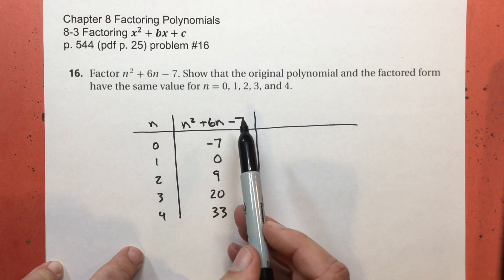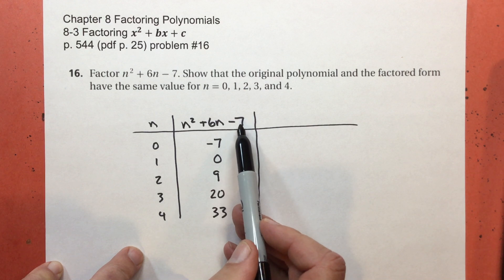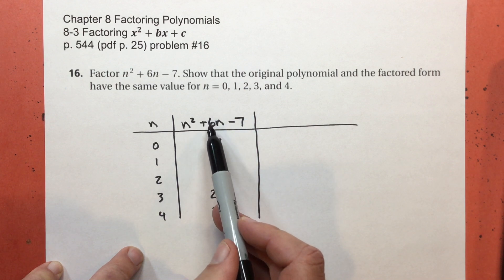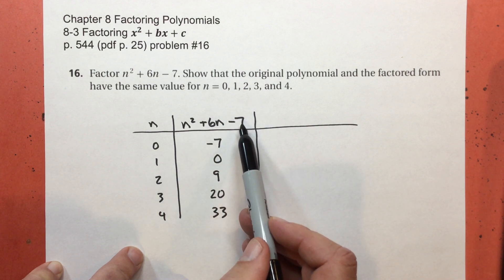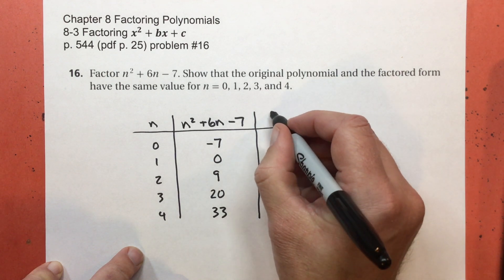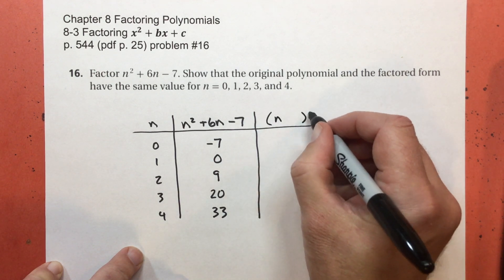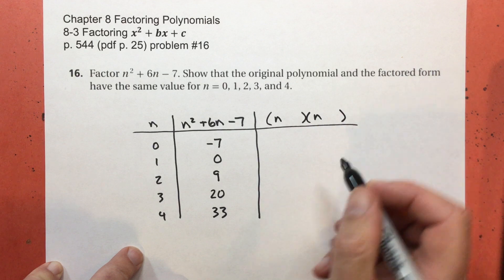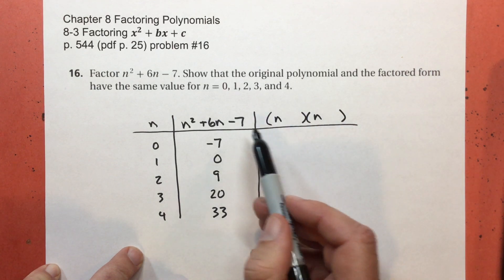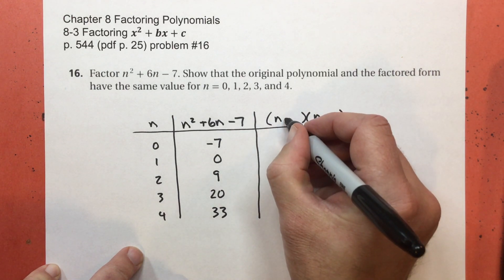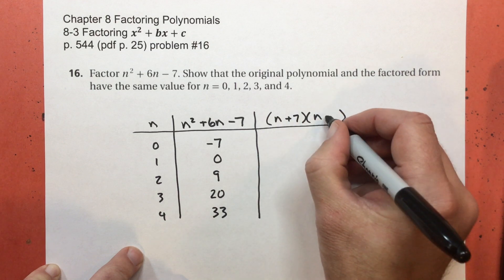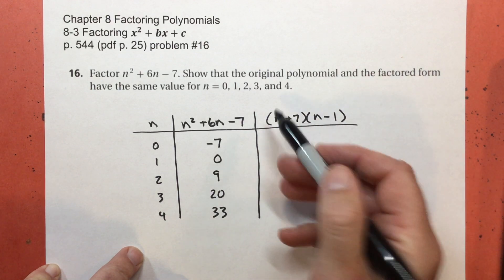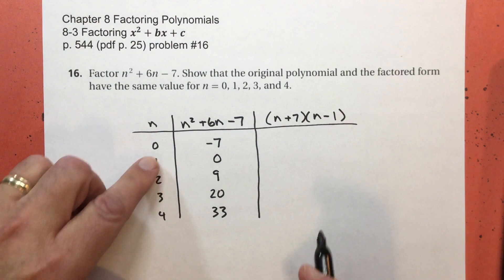All right, let's factor it. What two numbers multiply to give negative 7 but add to give positive 6. To get a negative 7, one of them has to be positive and one of them has to be negative. And the number that looks bigger is going to be the positive. So the only choice I have is plus 7 subtract 1.